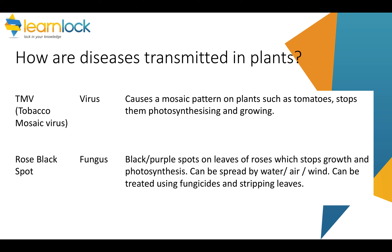The two main diseases you need to know are TMV, which stands for tobacco mosaic virus, and rose black spot fungus. TMV causes a mosaic pattern on plants such as tomatoes, and that stops them photosynthesising and therefore growing. Rose black spot is a fungus on rose plants — it causes black and purple spots on the leaves, stops growth, and prevents photosynthesis. It can be spread by water or wind, and it's treated using fungicides to kill the fungus and stripping off all infected leaves to prevent it spreading to other plants.